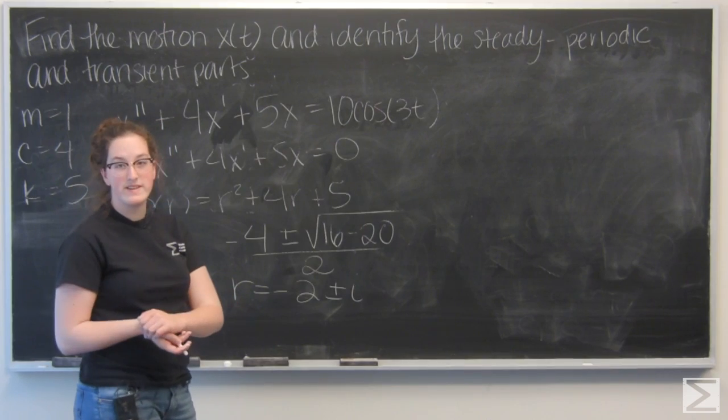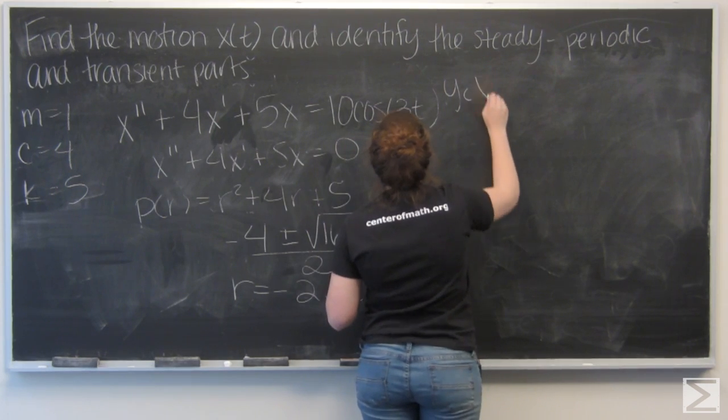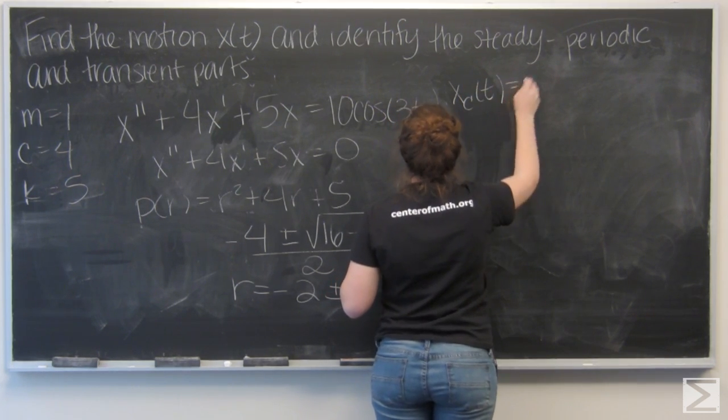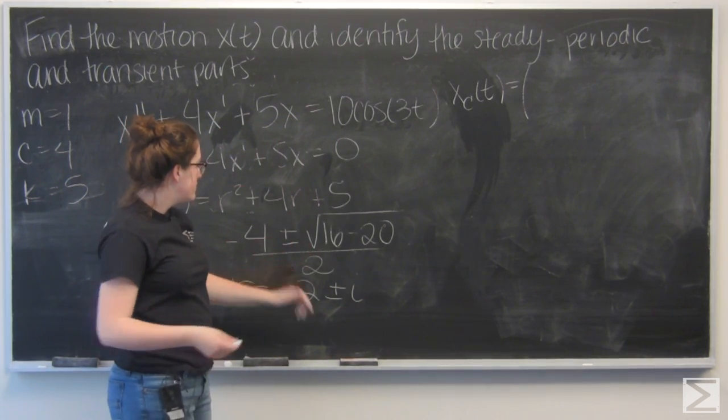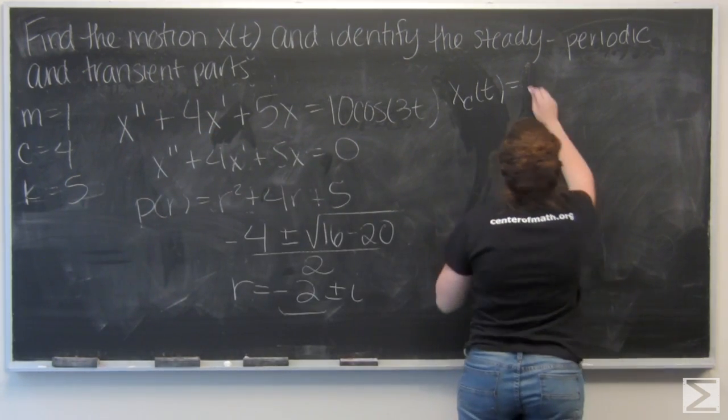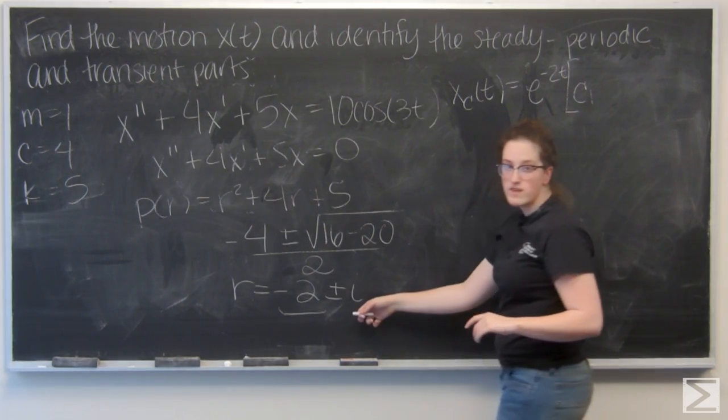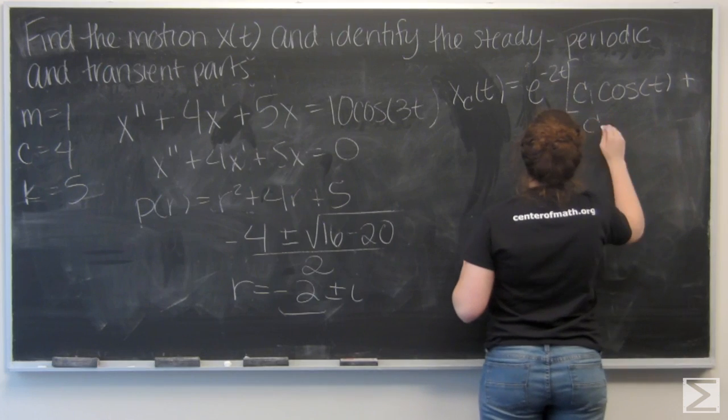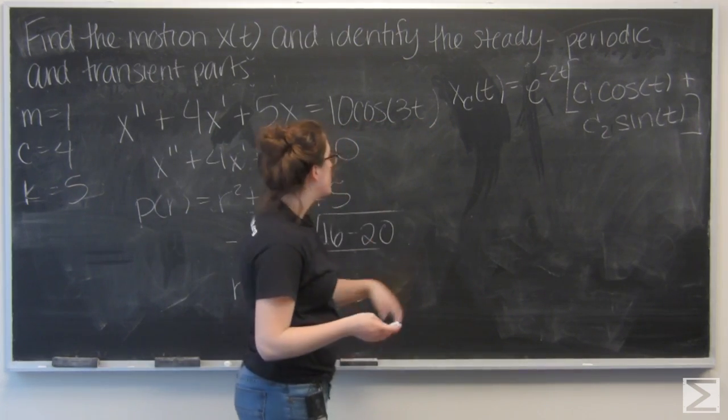So I get that my roots are negative 2 plus or minus i. And I can use those to write the general solution to the homogeneous equation, xc. So I have e to the real portion of the solution, so e to the negative 2 times t times c1 cosine of the coefficient of i, which is just 1, so cosine of t plus c2 sine of t. So that is xc.